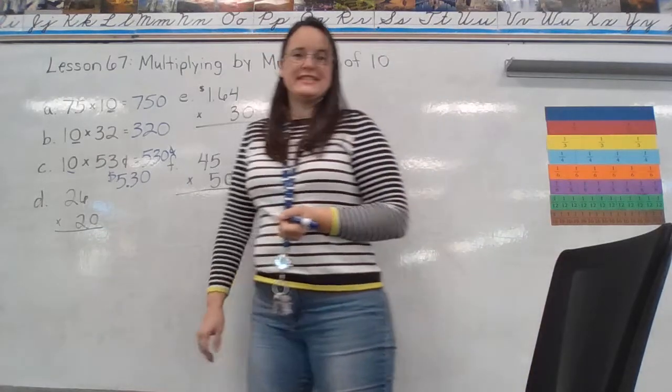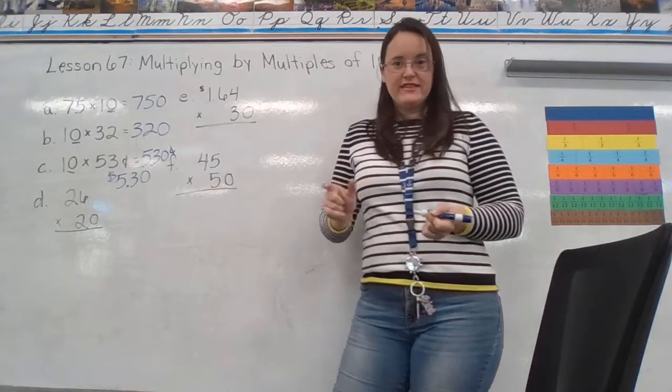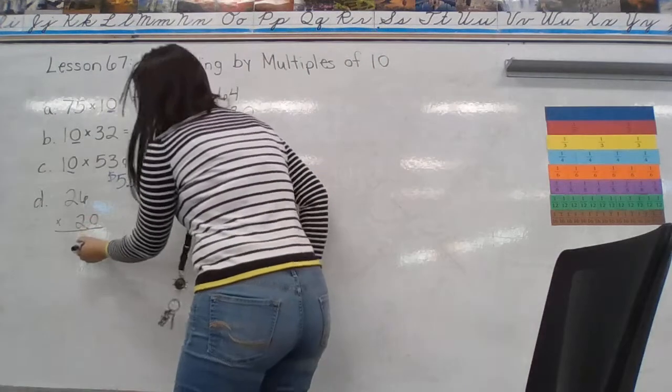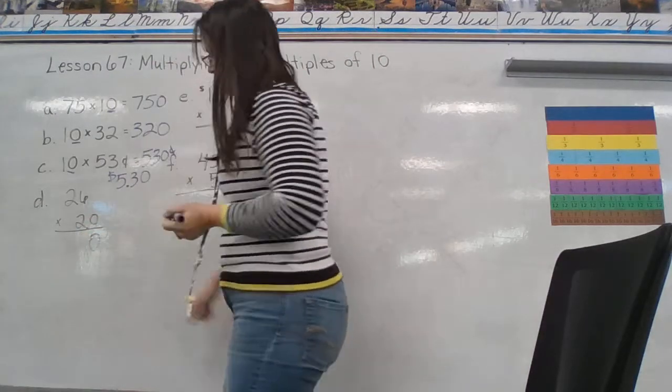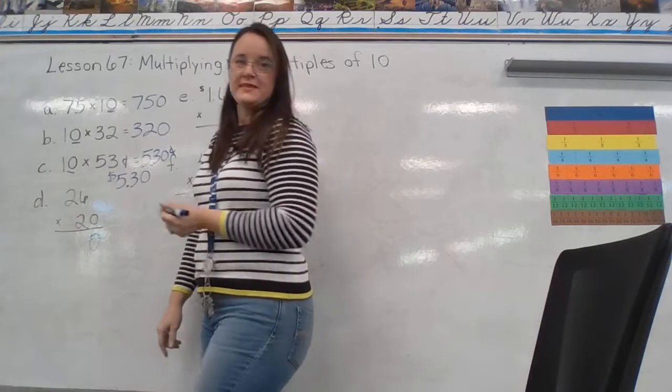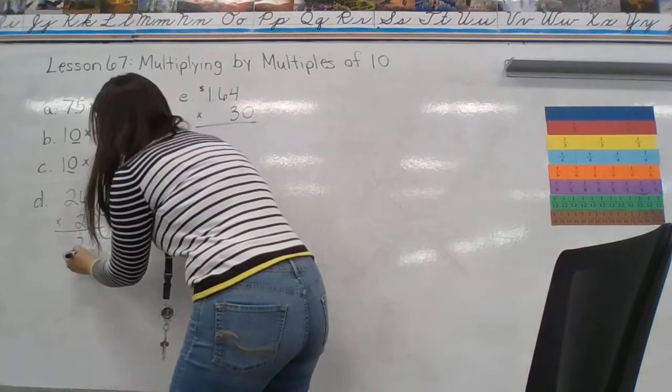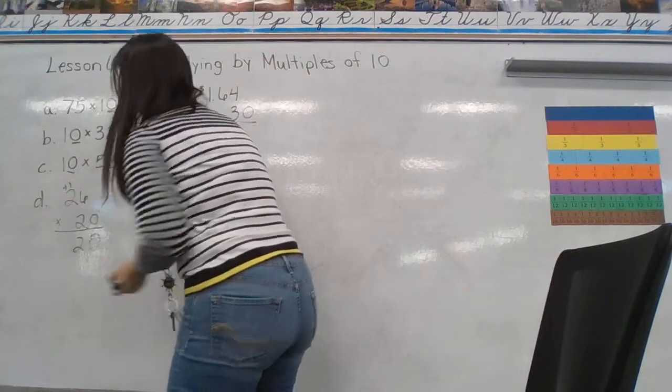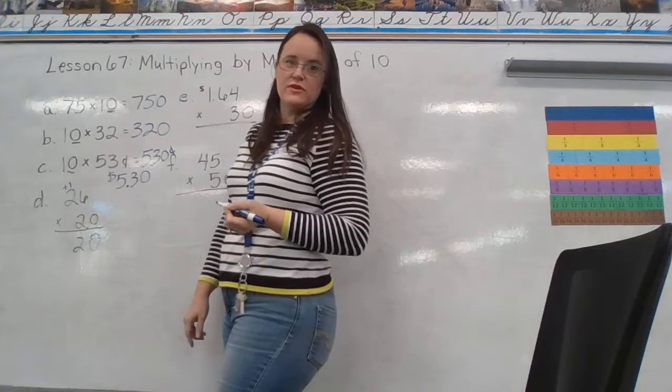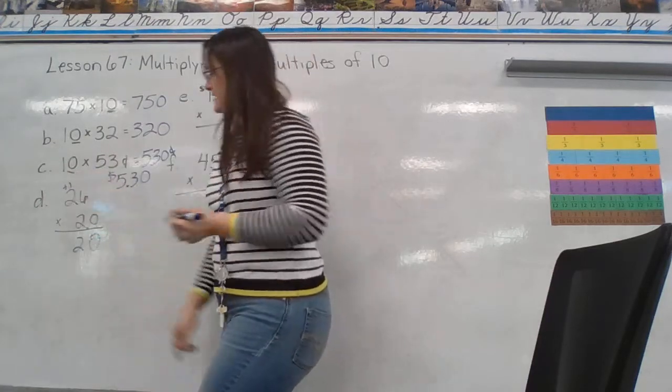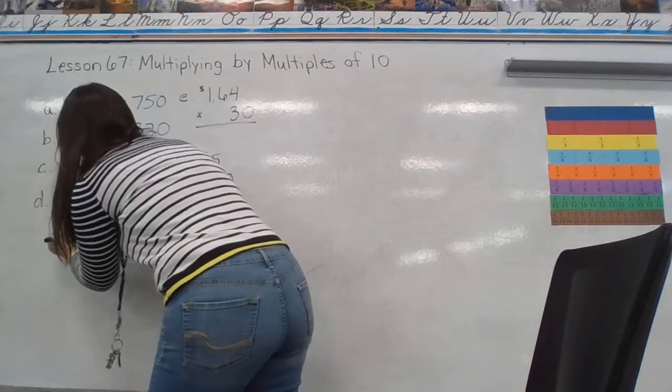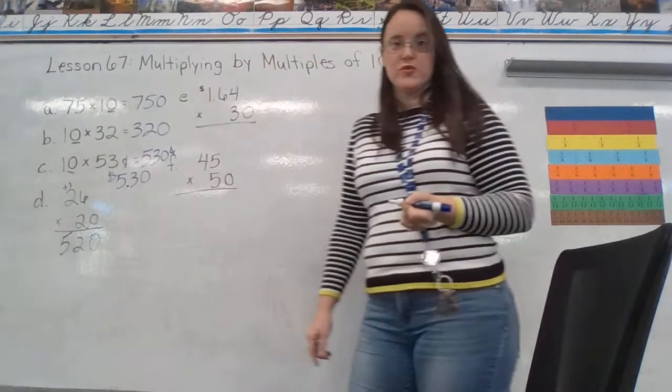Moving on to D. They wrote this one vertically for us. So, we can just drop our 0. 6 times 2 gives me 12. Carry my 1. 2 times 2 is 4. Plus 1 is 5. So, D is 520.